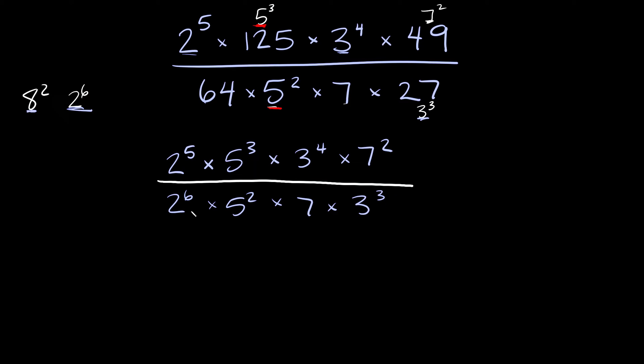Now as you can see we have a lot of things that match up. We have 2's here, 5's here, 3 here and 3 here and 7's, so now we can start canceling some stuff out.